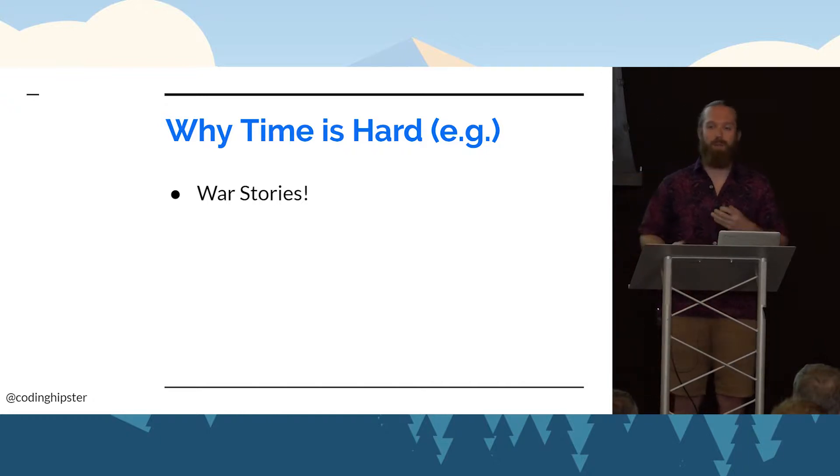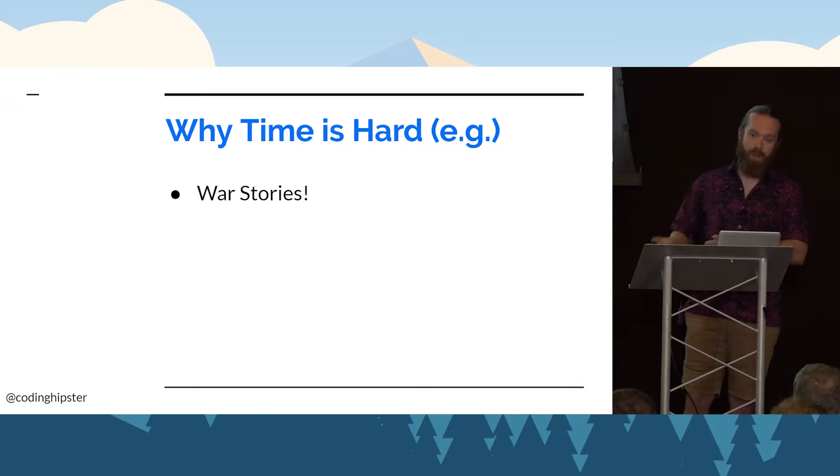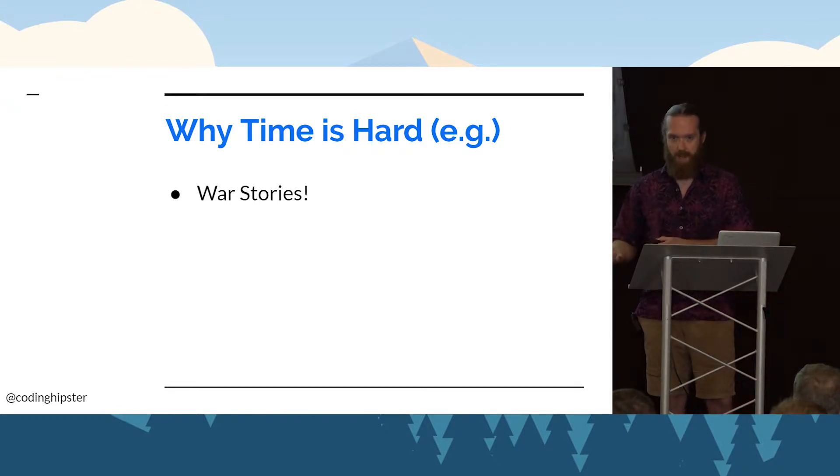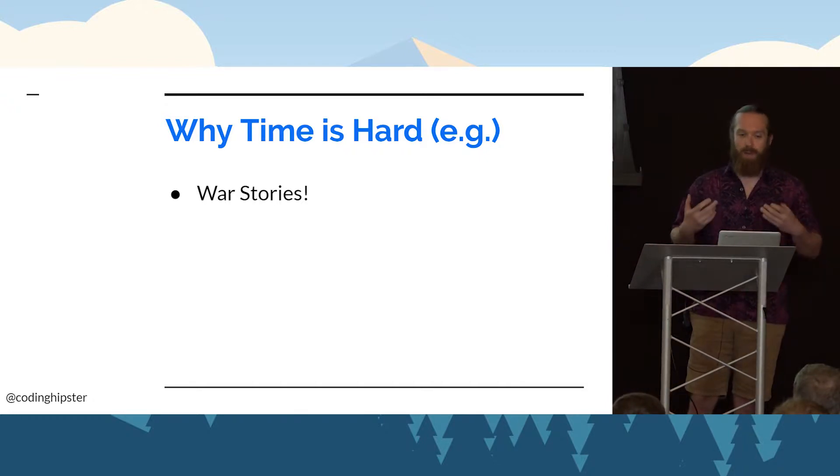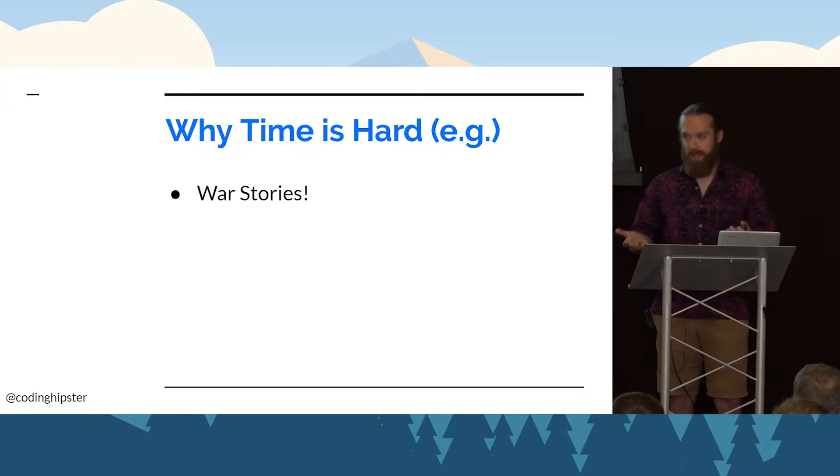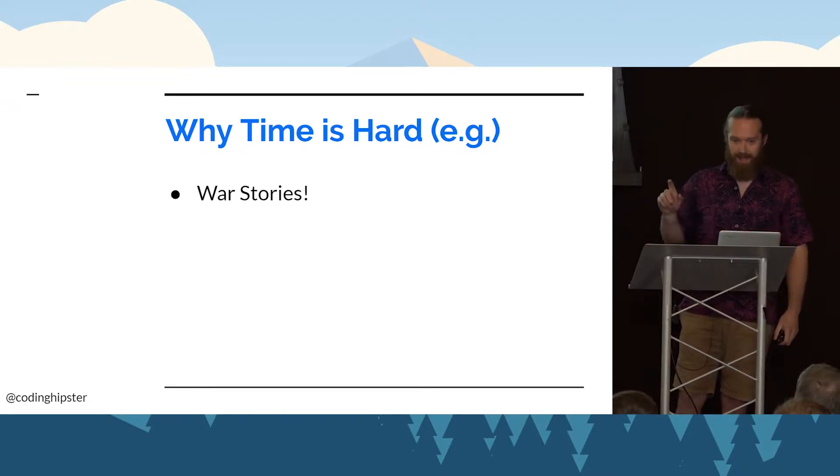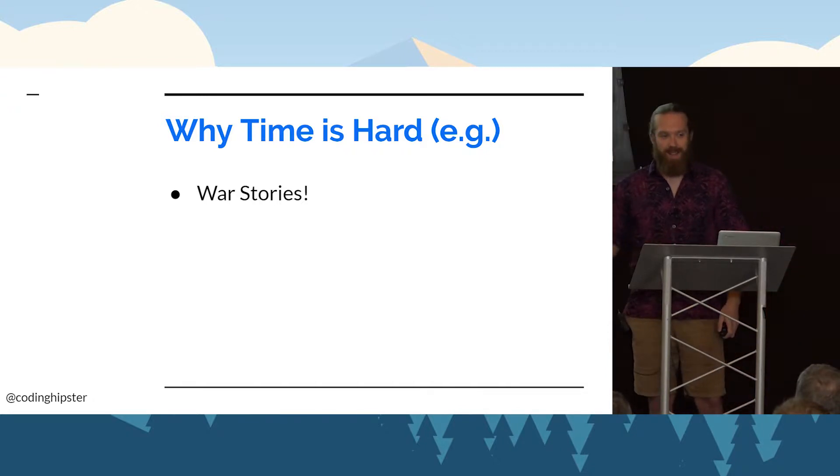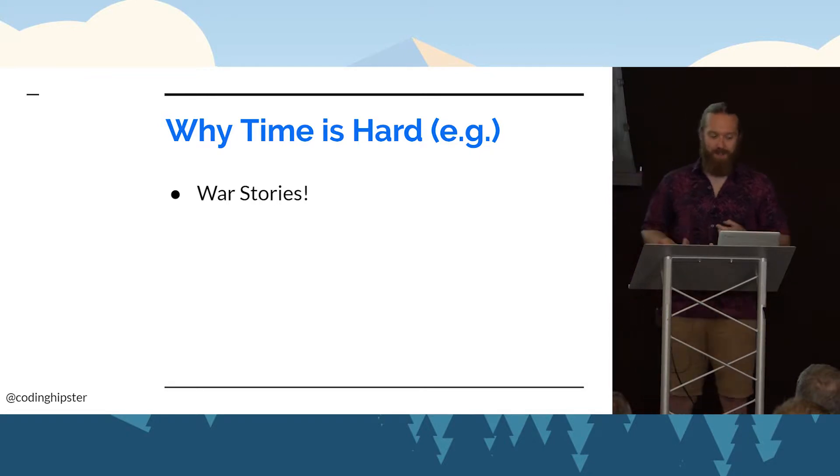And then I think my favorite example was when I was interfacing with a third-party API. We were discussing with them how we were going to use their API, and they essentially had two APIs, a service one and a billing one. They told us that both these APIs were on UTC time. They weren't. One of them was on Pacific time, and the other one was on UTC. The only way we figured that out is we started looking at the data that was coming from their API, and realizing it wasn't matching the timestamps in the database. So those are just a couple of good examples of why time can be so hard.